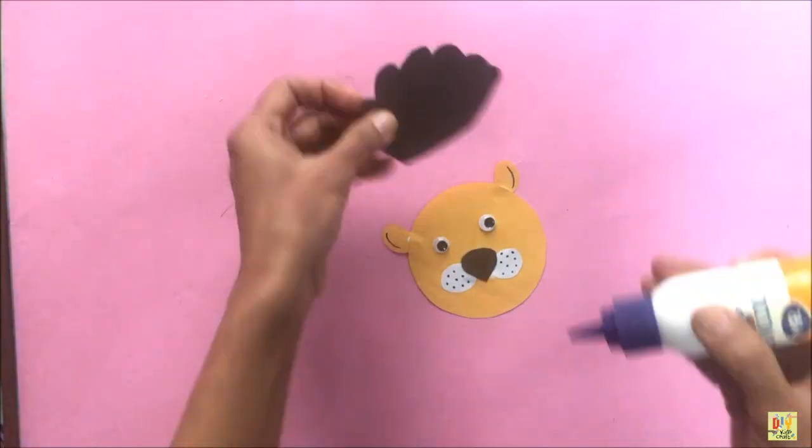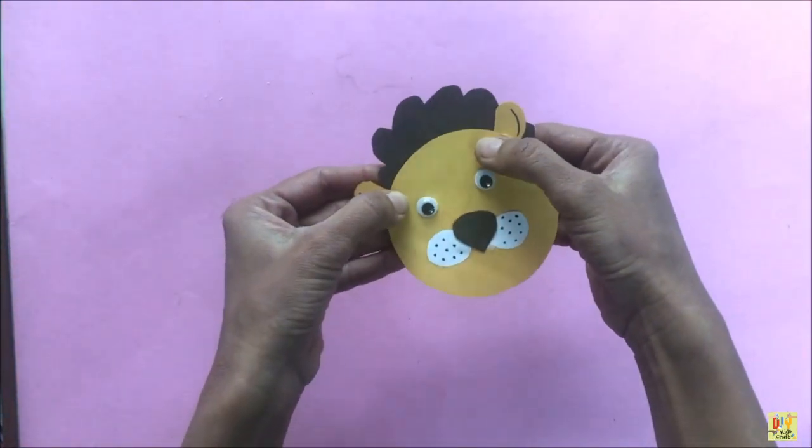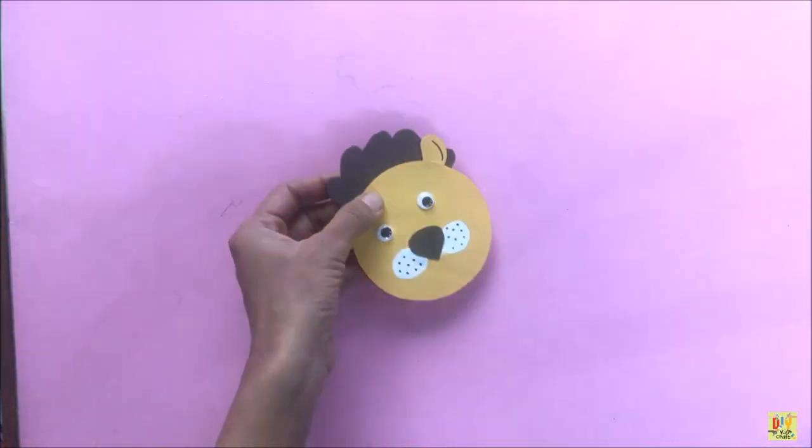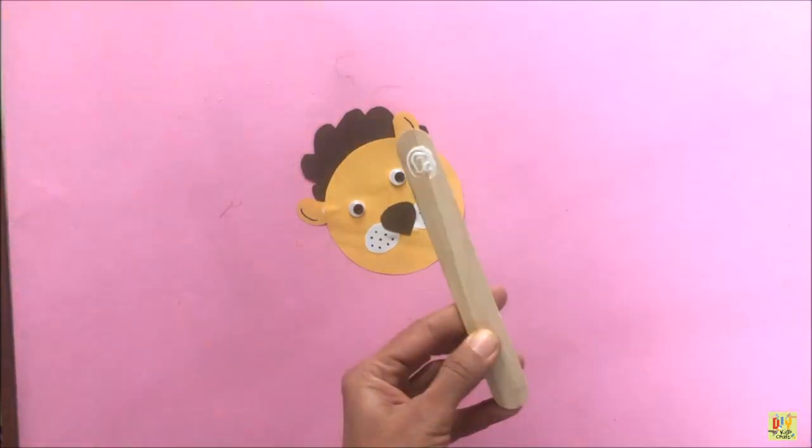And let's not forget the hair. Grab your popsicle stick, apply glue, and place the head.